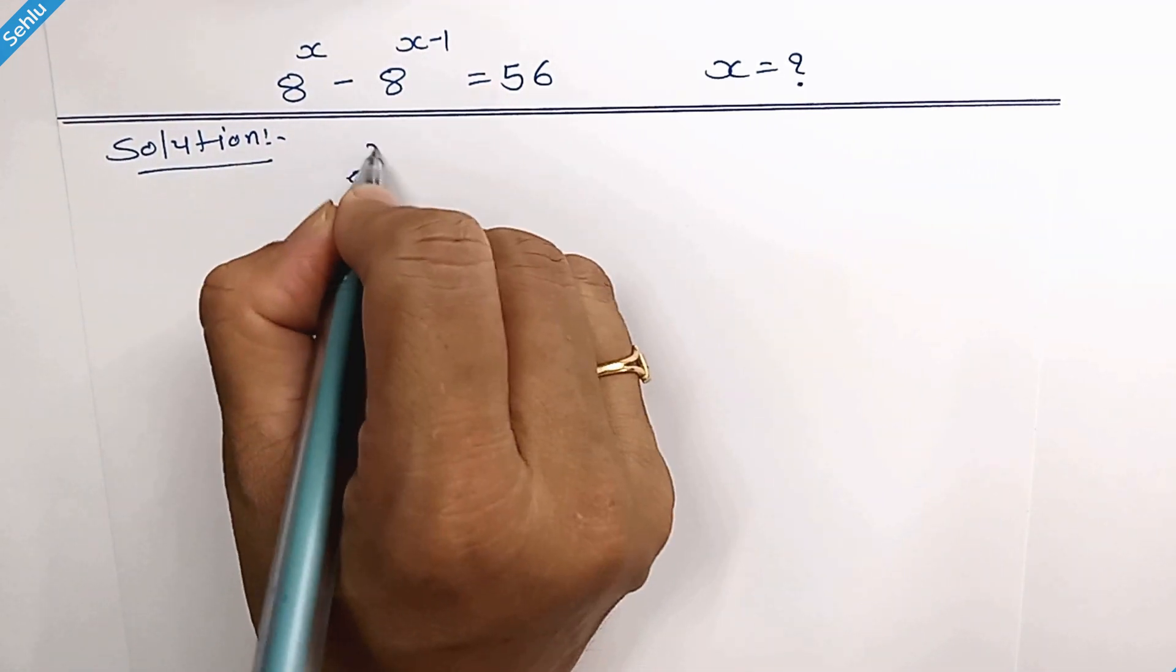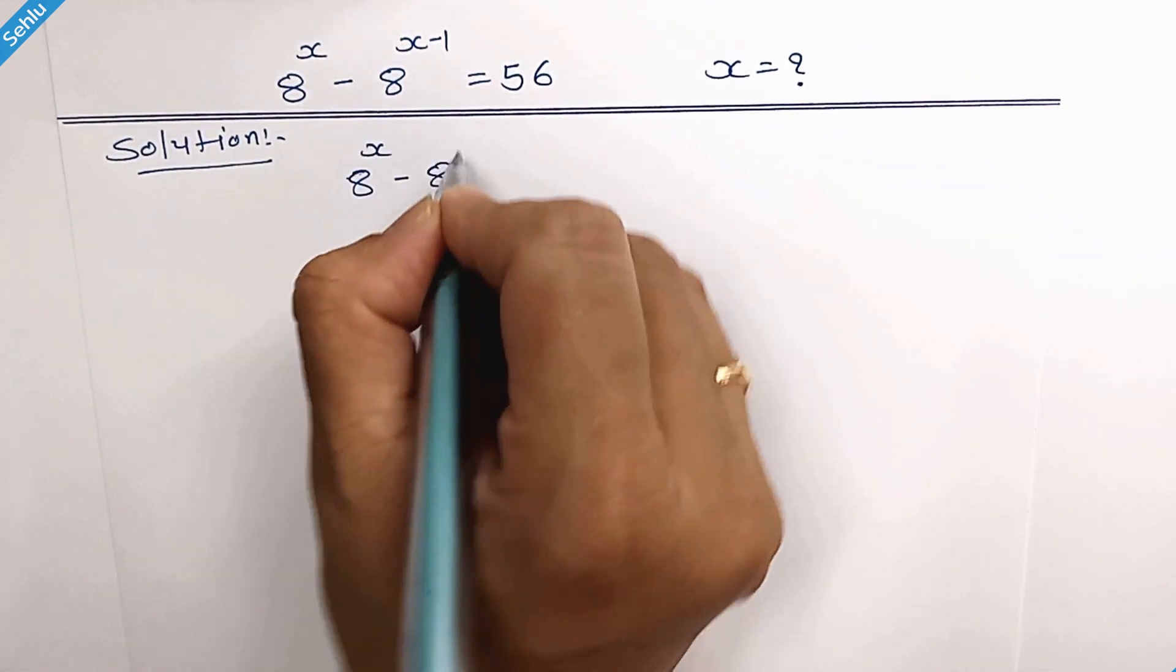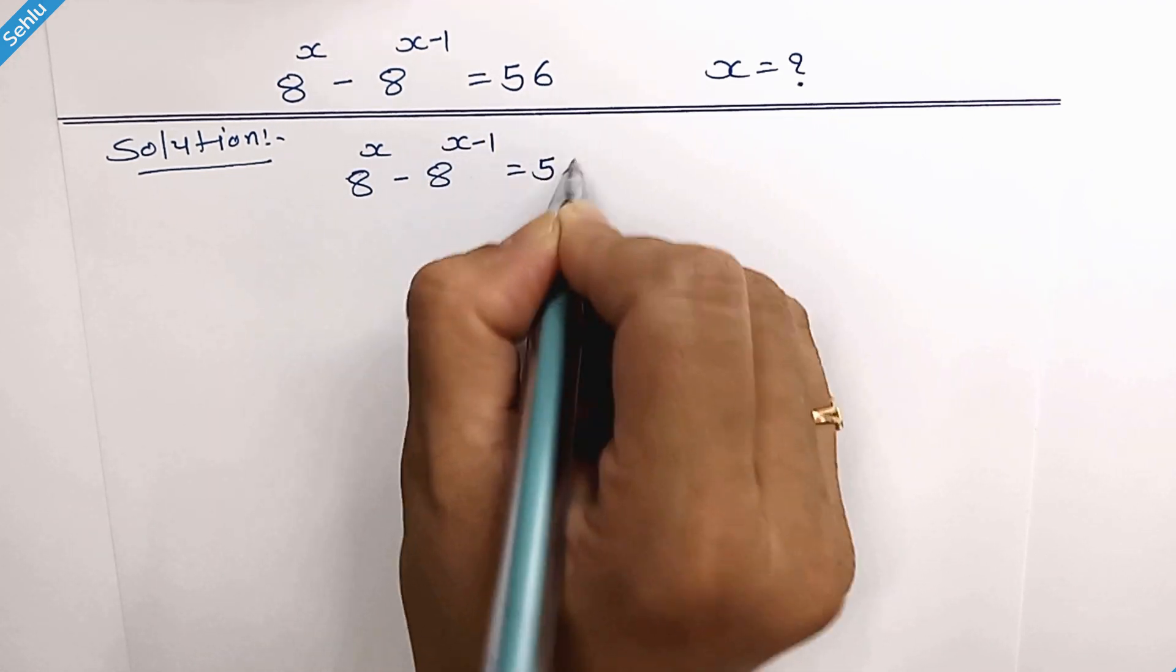Let me put the question first. 8 to the power x minus 8 to the power x minus 1 is equal to 56.